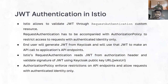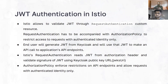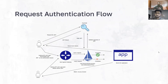Istio allows us to validate JWT tokens using request authentication, which is a custom resource. Request authentication will validate whatever access token we attach to our request while making API calls to our applications and API endpoints, and validate it against KeyCloak — because we will be using KeyCloak as our authentication provider in this demo. Once the JWT is authenticated, it gets passed to the authorization policy, which verifies whether it is an authenticated identity or not. If it is an authenticated identity, it will allow us to access the API; otherwise we will get a 403 access denied error.